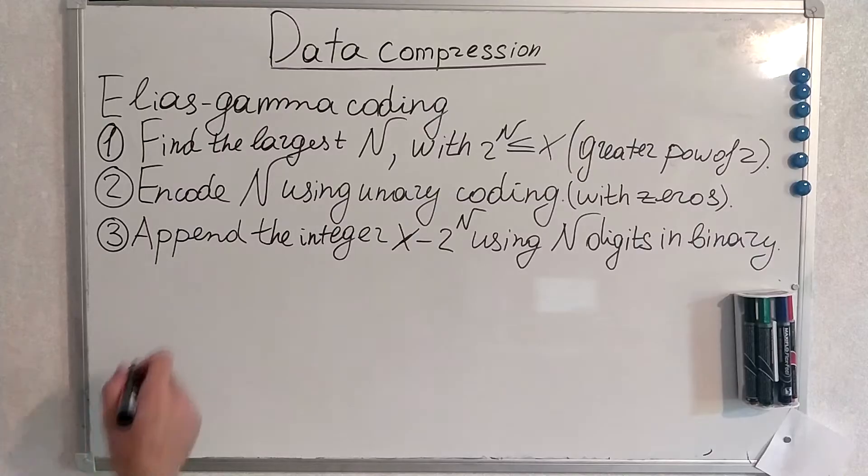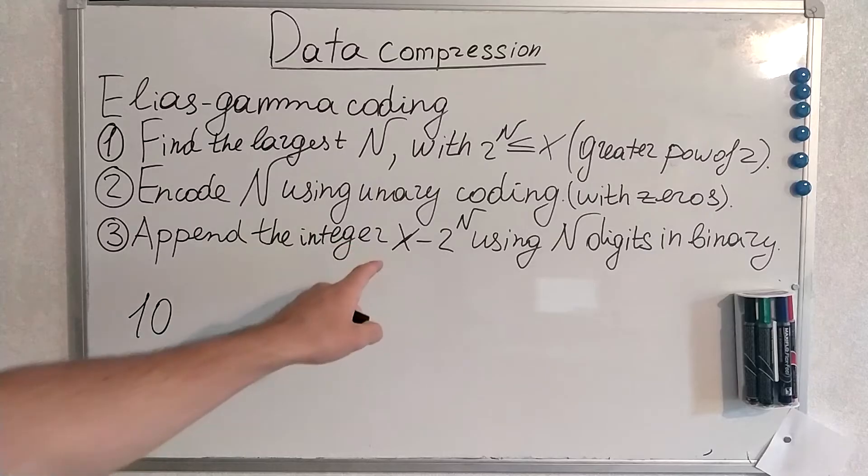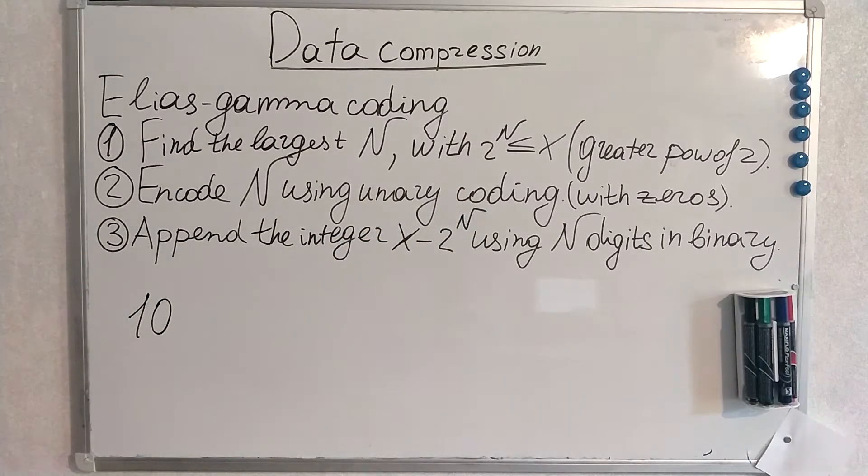Let's try to encode number 10. First of all, we find the largest N, which is some power of 2. Of course, this will be 2 to the third power. This will be 8.